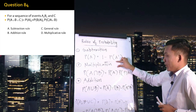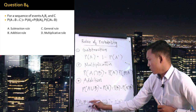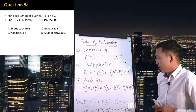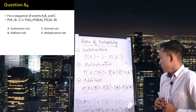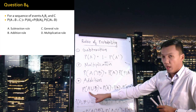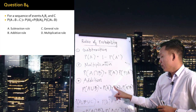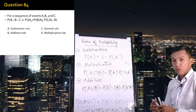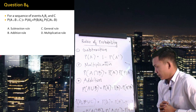We have subtraction, multiplication, and addition rule. As you can observe, the formula being questioned is actually an extension of the addition rule. So the answer is still addition rule, letter B. The addition rule states: the probability of A union B equals the probability of A plus the probability of B, minus the probability of them occurring at the same time.